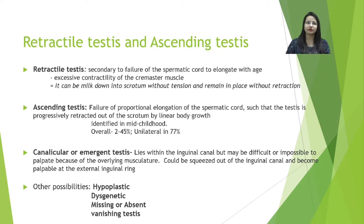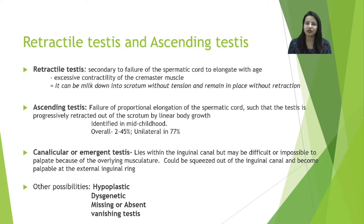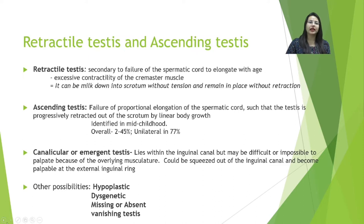Ascending testis is due to failure of proportional growth of the spermatic cord. Initially, the testis would have been found in the scrotal sac at birth and in early childhood, but as the child grows the testis becomes intra-inguinal and parents can no longer appreciate it in the scrotum. Canalicular or emergent testes lie in the canal and are usually difficult to palpate due to overlying musculature, but can be brought out of the superficial inguinal ring.